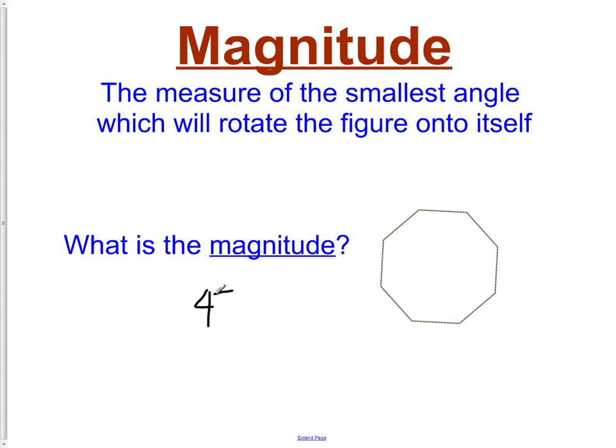The magnitude for this then would be 45. At a 45 degree turn, or rotation, the object is going to land back on top of itself as a perfect match. That would be the magnitude.